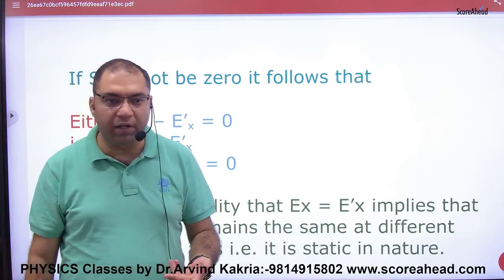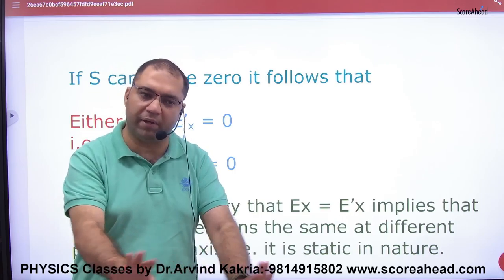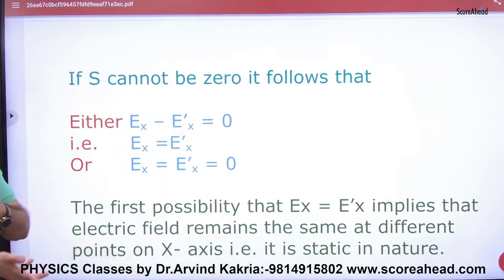And now Magnetic field. Similarly, it can be proved that the magnetic field is at 90 degrees. So that's why we get transverse nature.